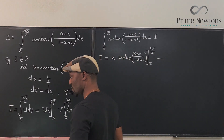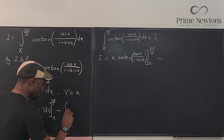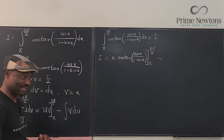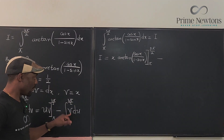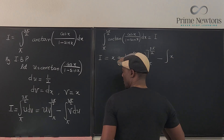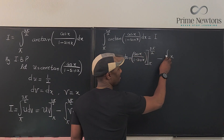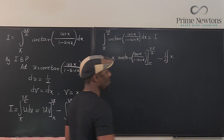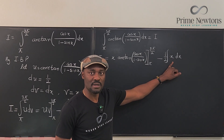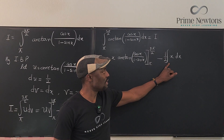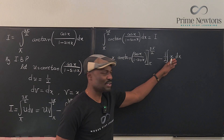Minus the integral of v du from pi to 3 pi over 2. Since v equals x and du equals 1/2, we get minus the integral of x times 1/2 dx. The 1/2 comes outside, and integrating x gives x squared over 2, so the second term becomes 1/4 x squared, evaluated from pi to 3 pi over 2.